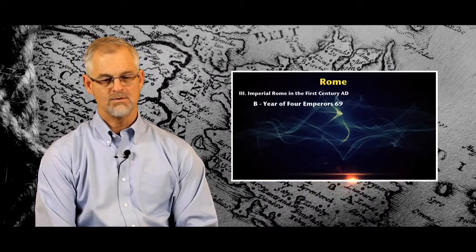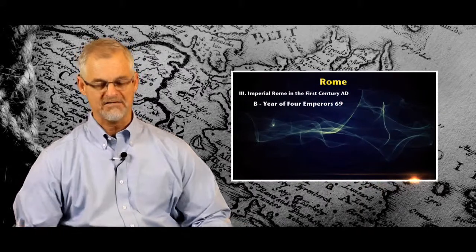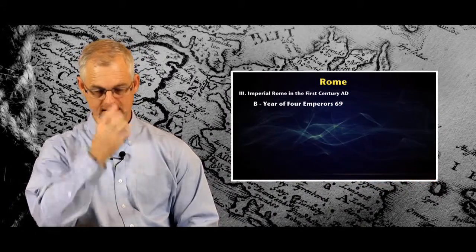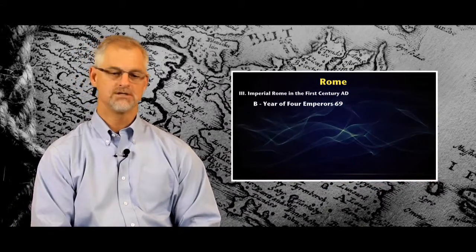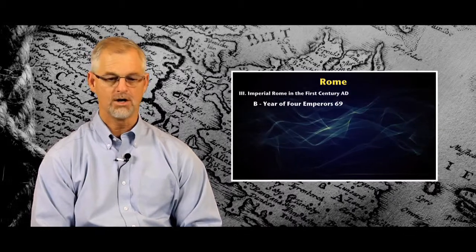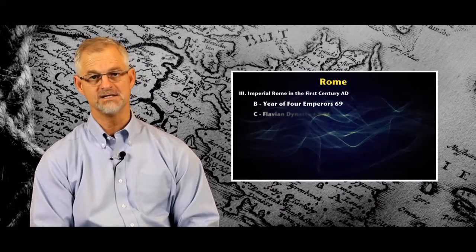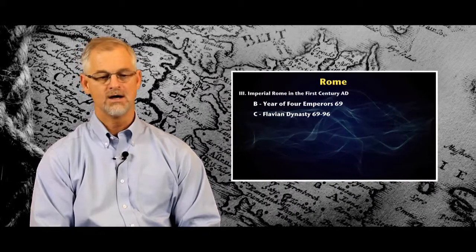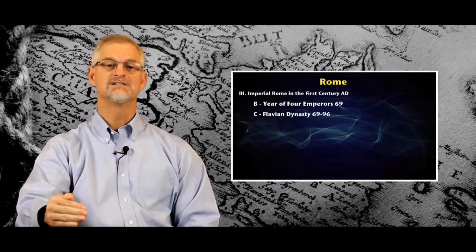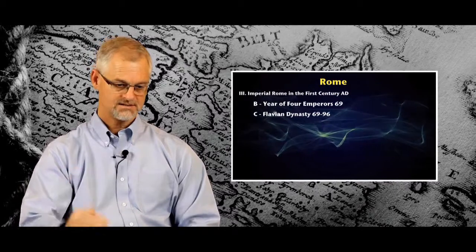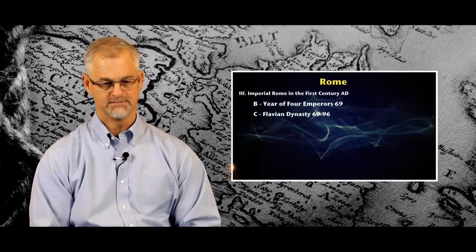The victor out of that mess that was the year 69 was the emperor Vespasian, who set up a new dynasty. In Rome, we call it the Flavian dynasty. Vespasian, and then he will be succeeded by his two sons, Titus and Domitian.